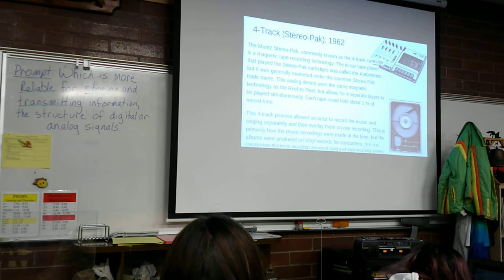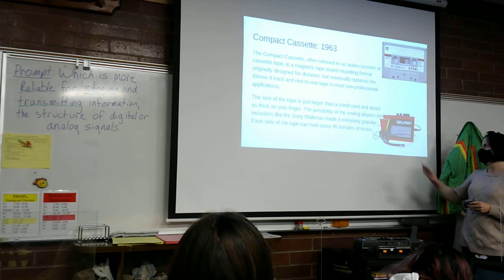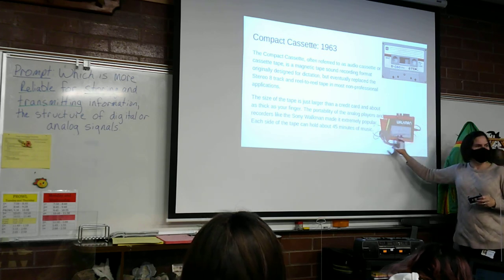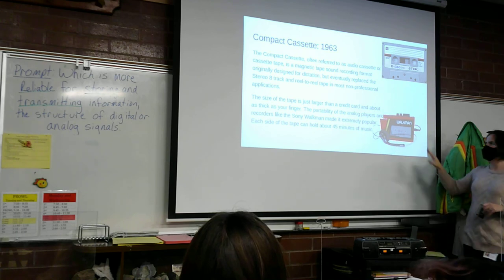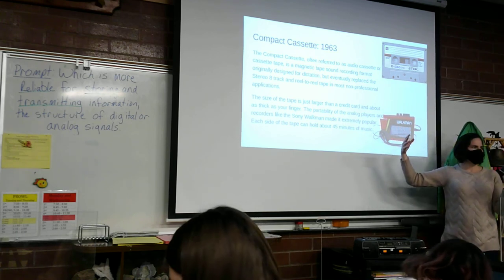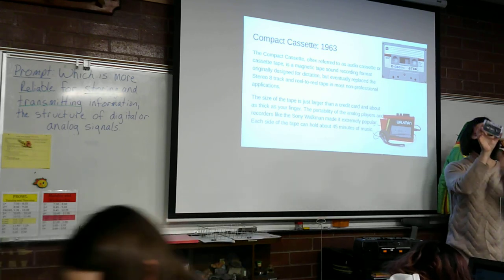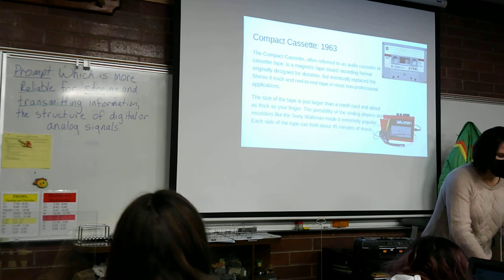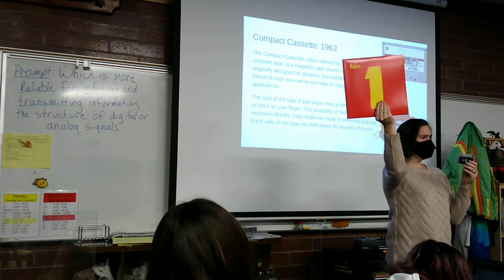This wasn't super portable, and that's where the compact cassette came out, also in the 60s. How many of you recognize something like this? If you've watched Guardians of the Galaxy, that's something a lot of people recognize from that. When they developed the compact cassette, they were basically able to make the reel-to-reel portable, stored in these small cases.